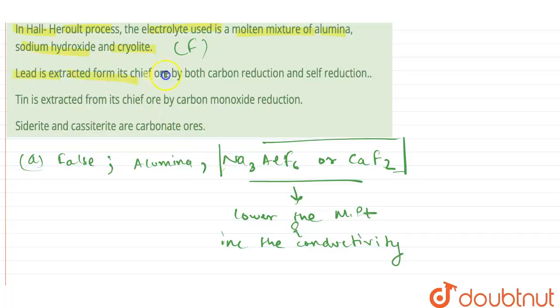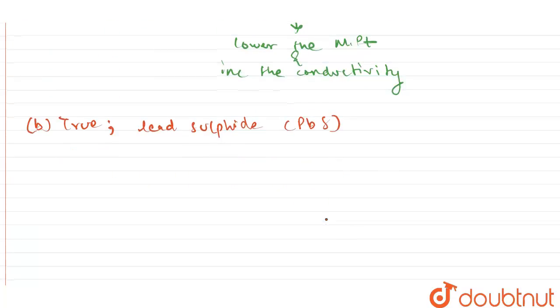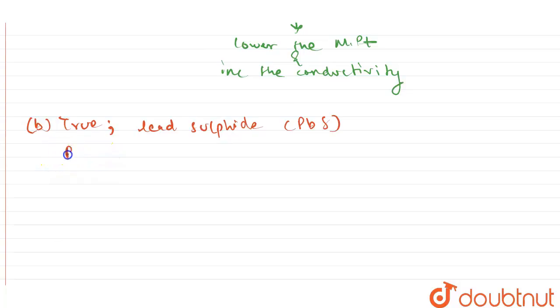Lead is extracted from its chief ore by both carbon reduction and self-reduction. So this statement is true. Why? Because what happens in the extraction of lead? This is first of all a true statement because the chief ore is lead sulfide, that is PbS. So what is the reaction involved?